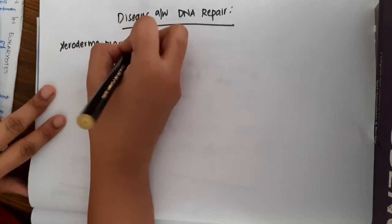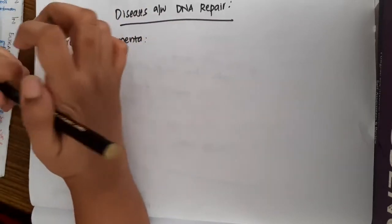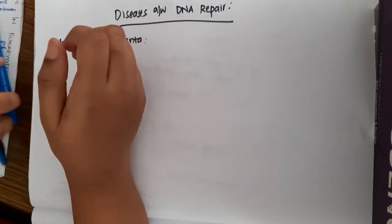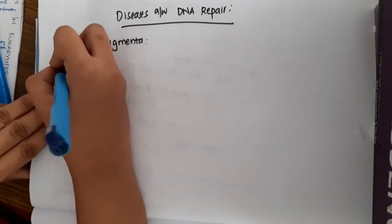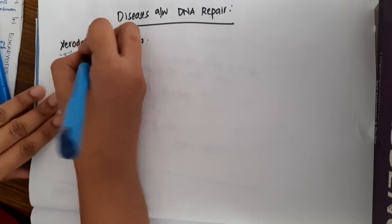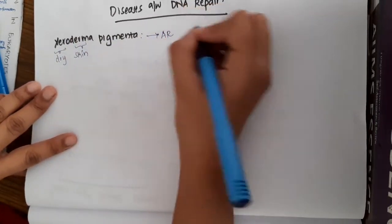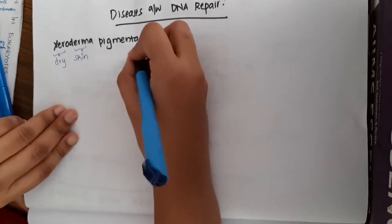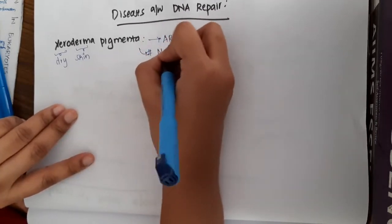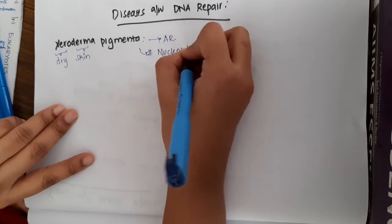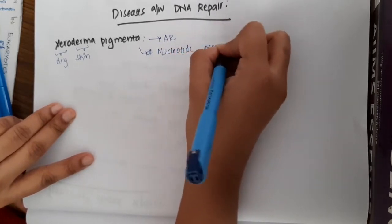As the name says, xero is dry and derma is skin, pigmentosa is pigmentation. This xeroderma pigmentosa is an autosomal recessive disease, and here there is a defect in nucleotide excision repair mechanisms.